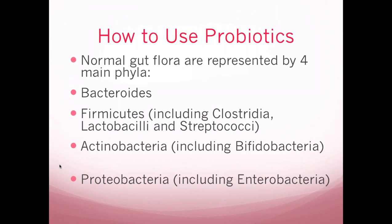Probiotics are defined as live organisms which, when administered in adequate amounts, confer a health benefit to the host. Normal gut flora are represented by major phyla: Bacteroidetes, Firmicutes, Actinobacteria, and Proteobacteria. Most probiotics — all your Lactobacillus and Bifidobacteria — fall into the Firmicutes category, so we're addressing only one area of our probiotic nature using the current commercially available probiotics.